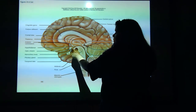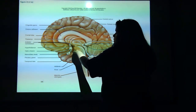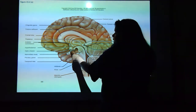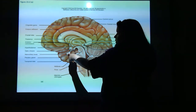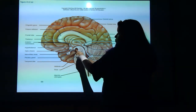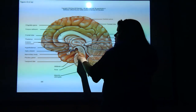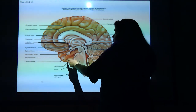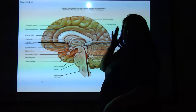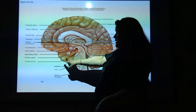Here is the hypothalamus, and if you come down, see this little dangly bit? This is the pituitary gland. Underneath here is that mammillary body. The temporal lobe — temporal bone, temporal lobe — is on the side.